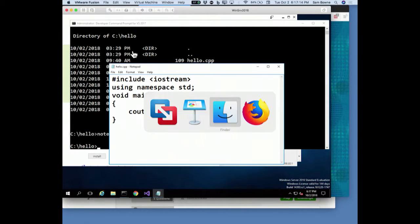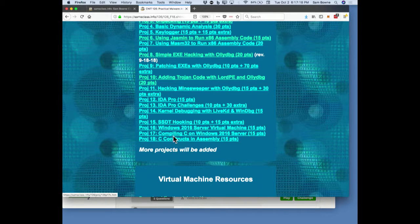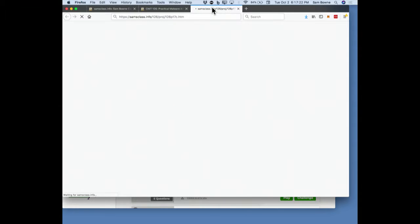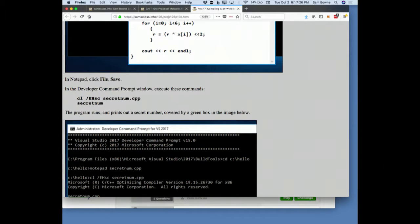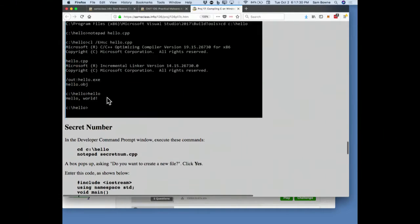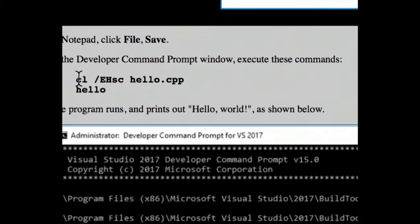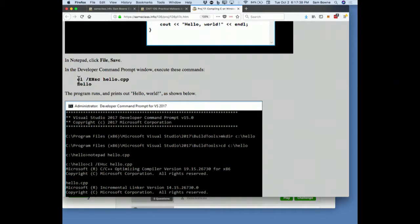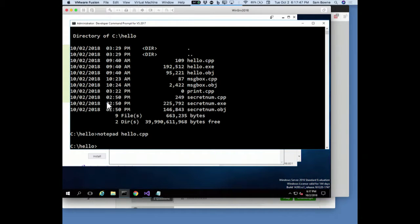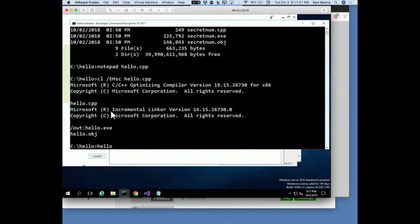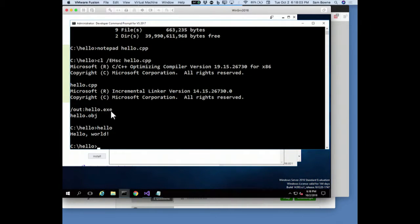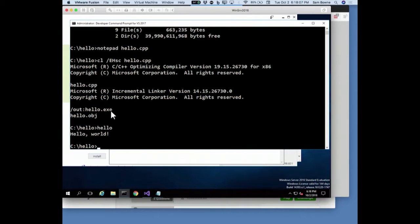You compile it with CL /EHSC. You can do CL /help and find out what that stands for, but I didn't bother. I just want normal compiling. This will compile the C++ and make an object file and link it into an executable and create hello.exe. Now you can run hello.exe and it says hello world. That's not very exciting, but it does give us C and a C compiler that works.